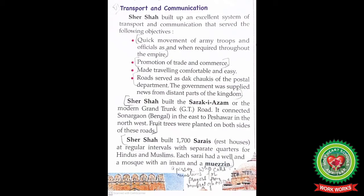Sher Shah built the Sarak-e-Azam, or the modern Grand Trunk Road. It connected Sonargaon in Bengal in the east to Peshawar in the northwest. Fruit trees were planted on both sides of these roads. He also built 1,700 sarais — rest houses — at regular intervals, with separate quarters for Hindus and Muslims. Each sarai had a well and a mosque with an imam and a moezzin.